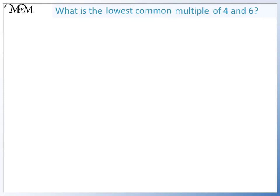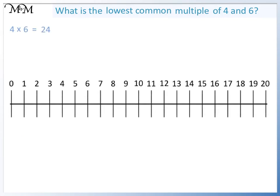What is the lowest common multiple of 4 and 6? 4 times 6 equals 24. So our lowest common multiple will not be larger than 24.